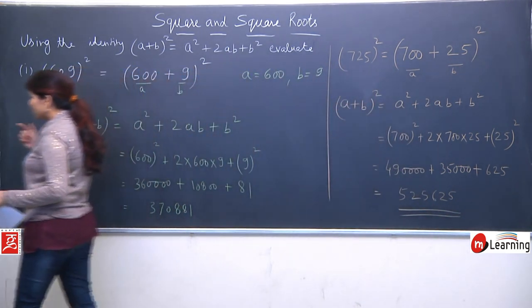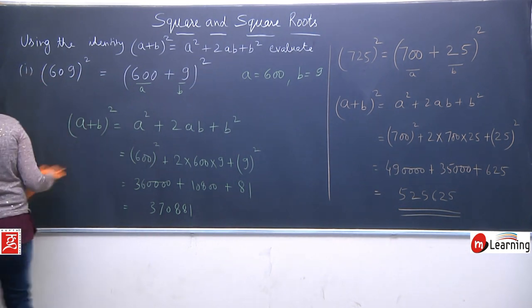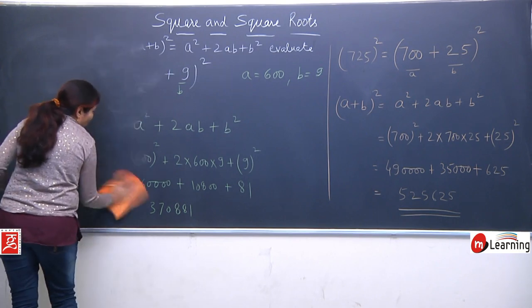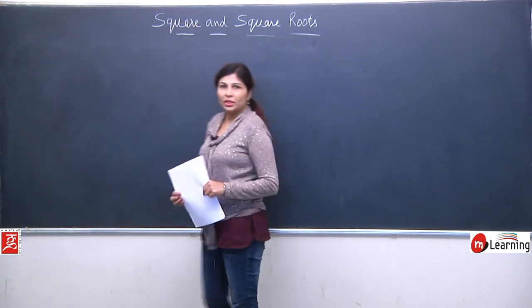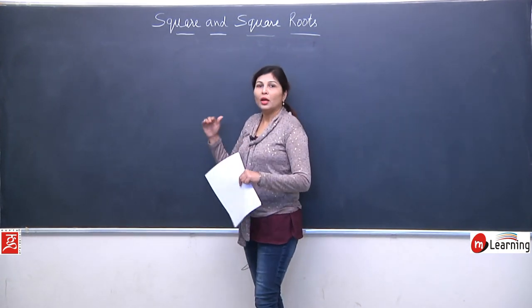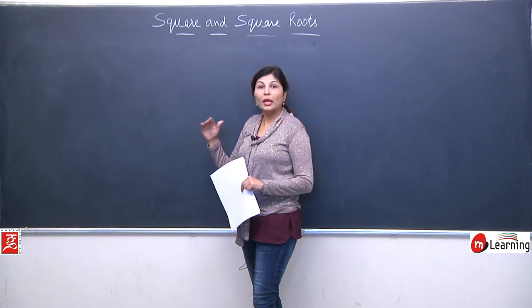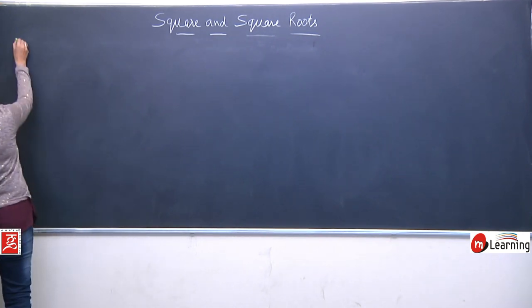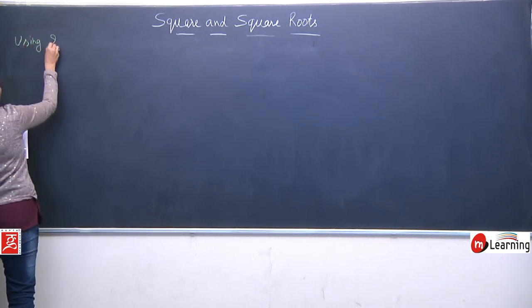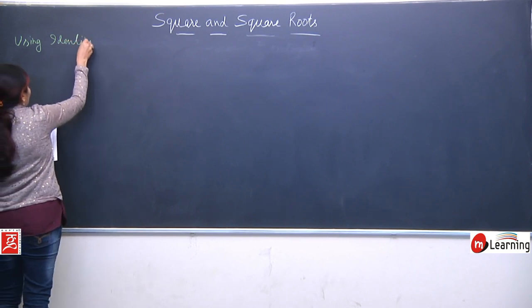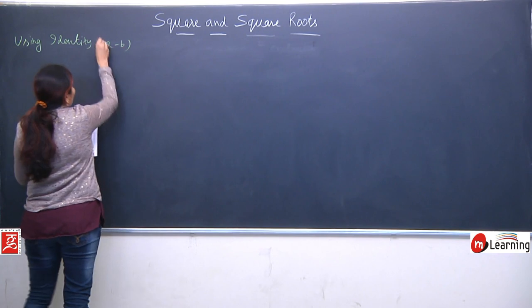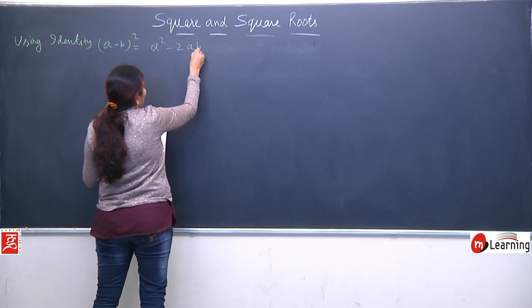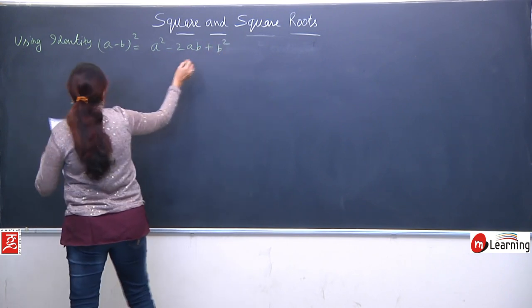We'll take a similar question for the negative identity. Just as we have (a+b)² identity, now we will take an example based on (a-b)² whole square. So we have solved 2 questions based on (a+b)², now I will take another example which will be based on (a-b)² — because this is also an important identity. Using identity (a-b)² which is always equal to a² - 2ab + b².